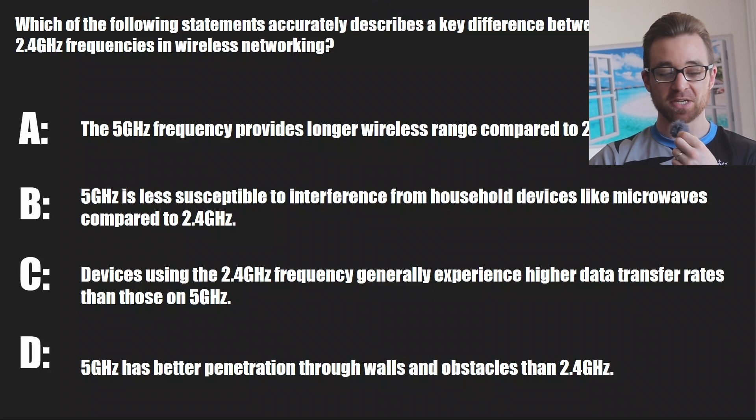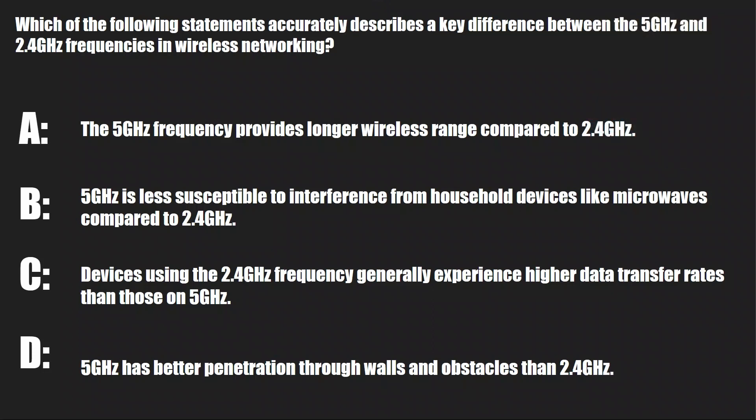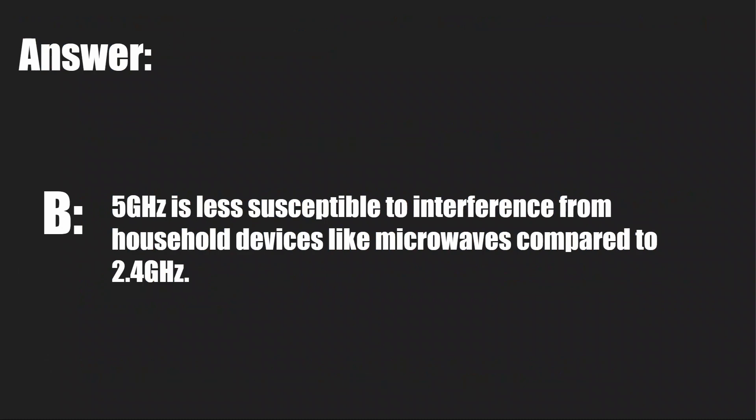And the final question for this exam objective quiz. Which of the following statements accurately describes a key difference between the 5 gigahertz and 2.4 gigahertz frequencies in wireless networking? A, the 5 gigahertz frequency provides longer wireless range compared to 2.4 gigahertz. B, 5 gigahertz is less susceptible to interference from household devices like microwaves compared to 2.4 gigahertz. C, devices using 2.4 gigahertz generally experience higher data transfer rates than those on 5 gigahertz. Or D, 5 gigahertz has better penetration through walls and obstacles compared to 2.4 gigahertz. And the answer is B.